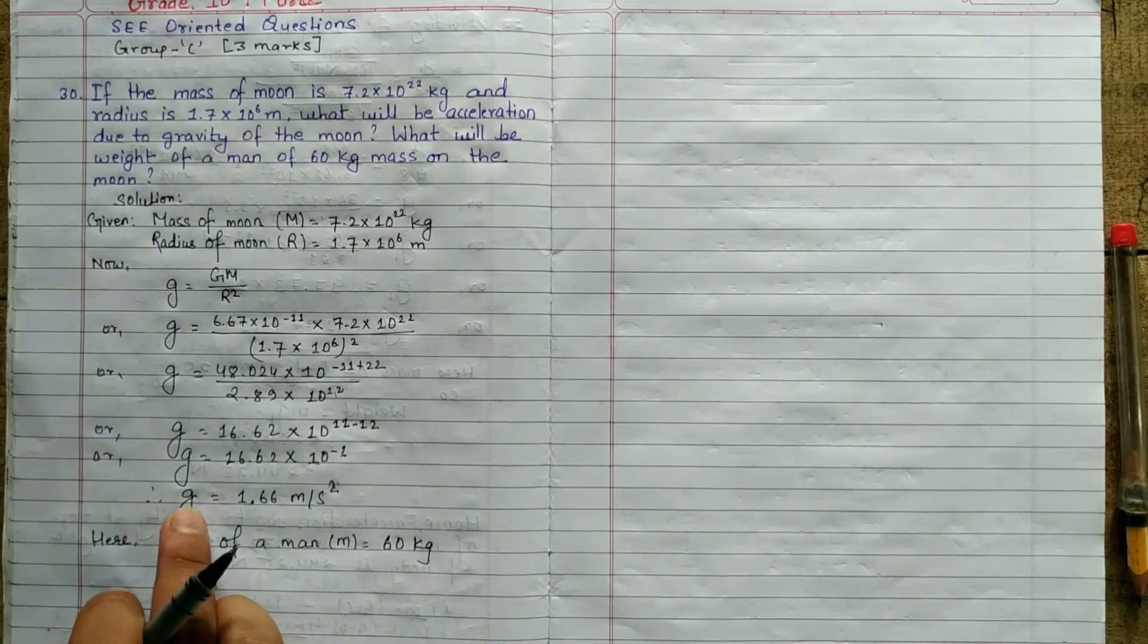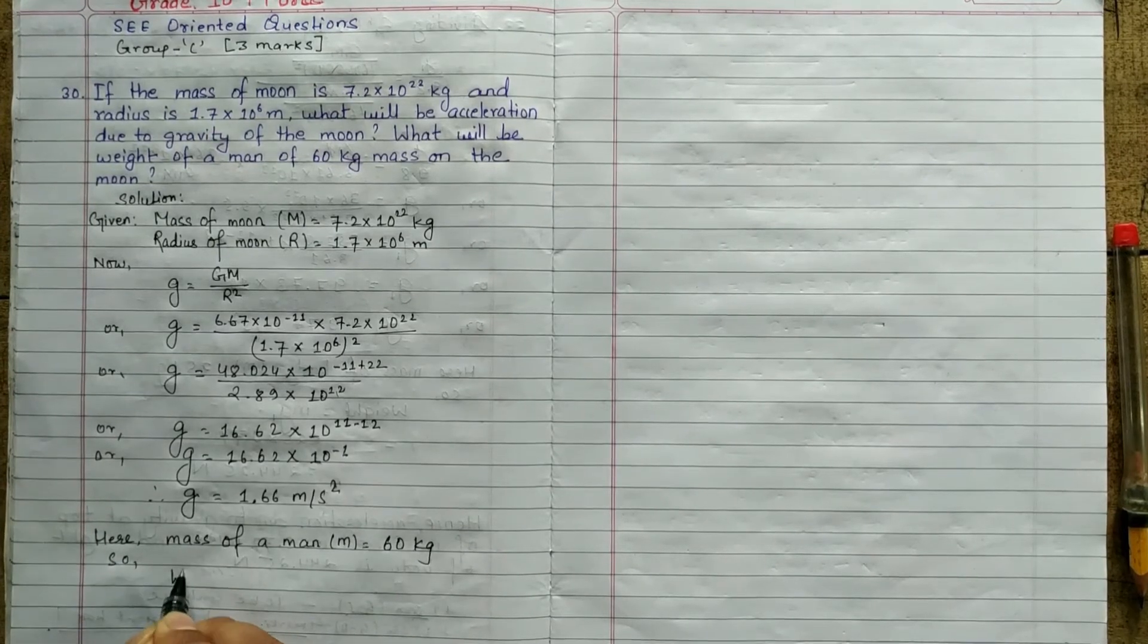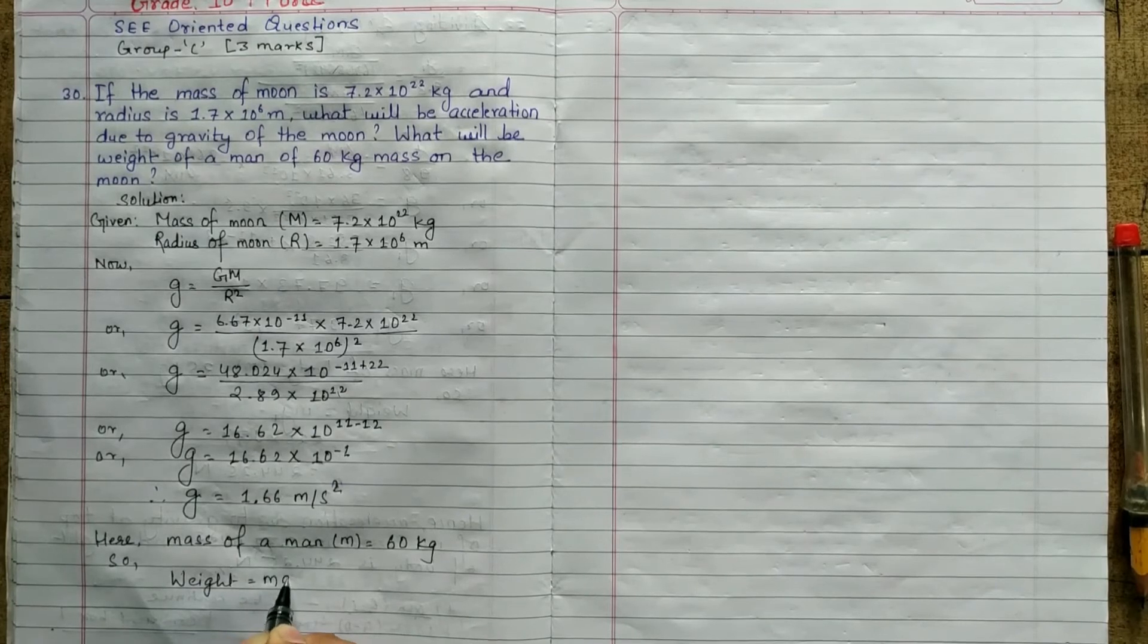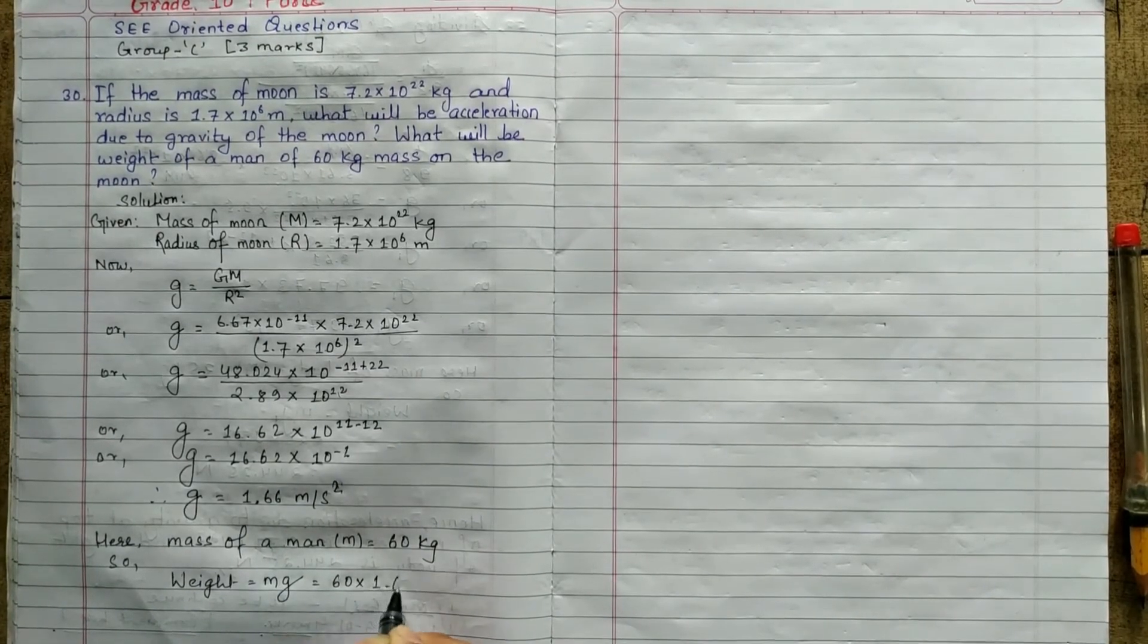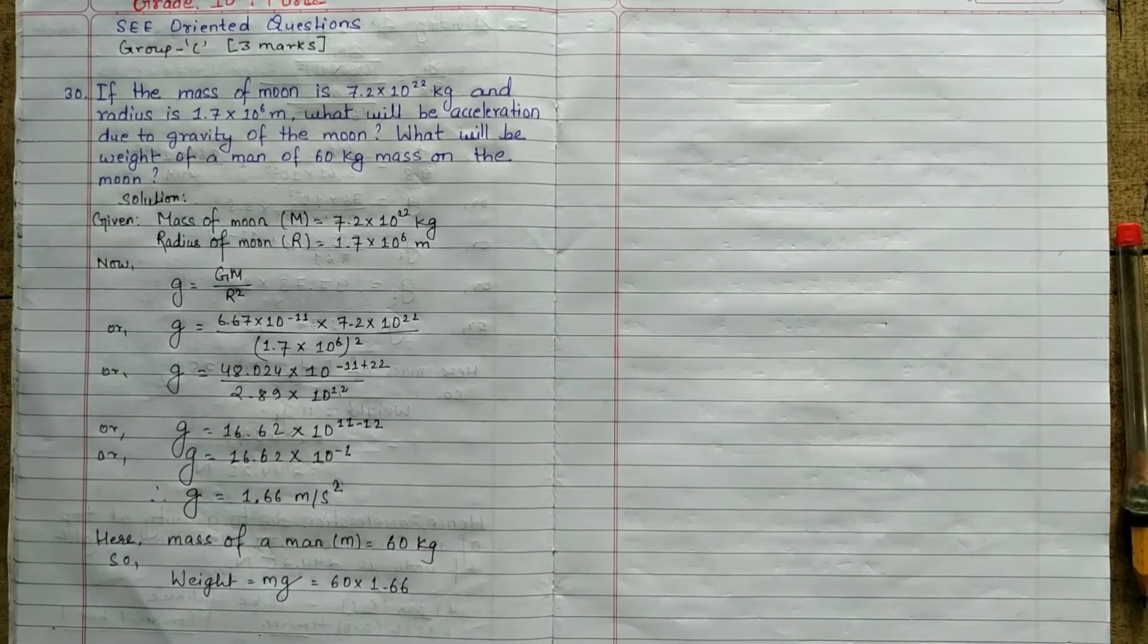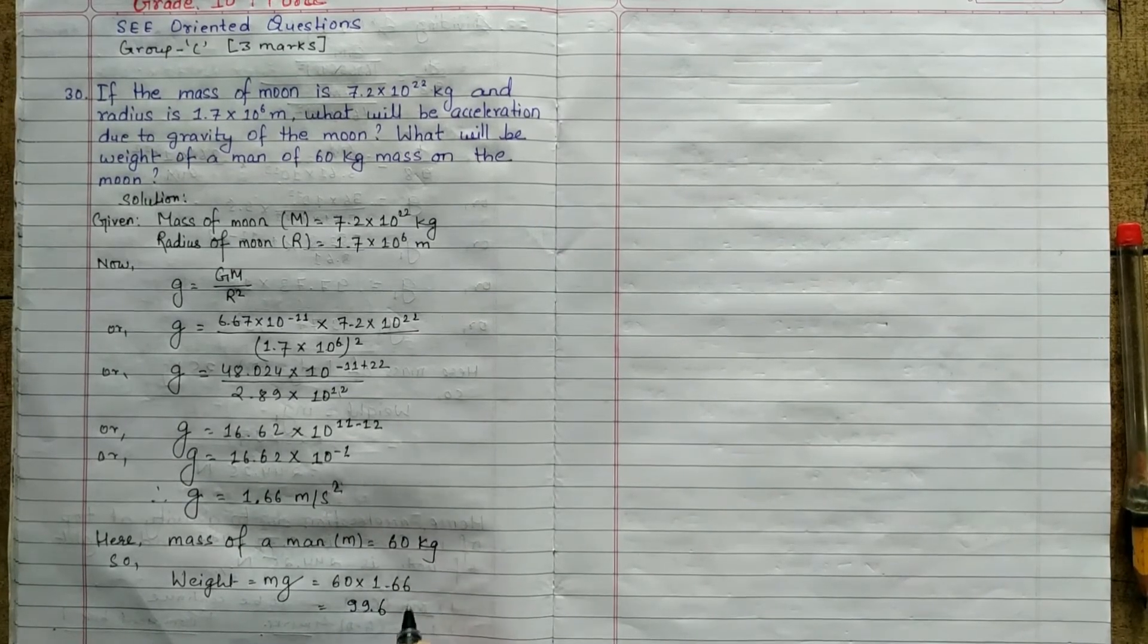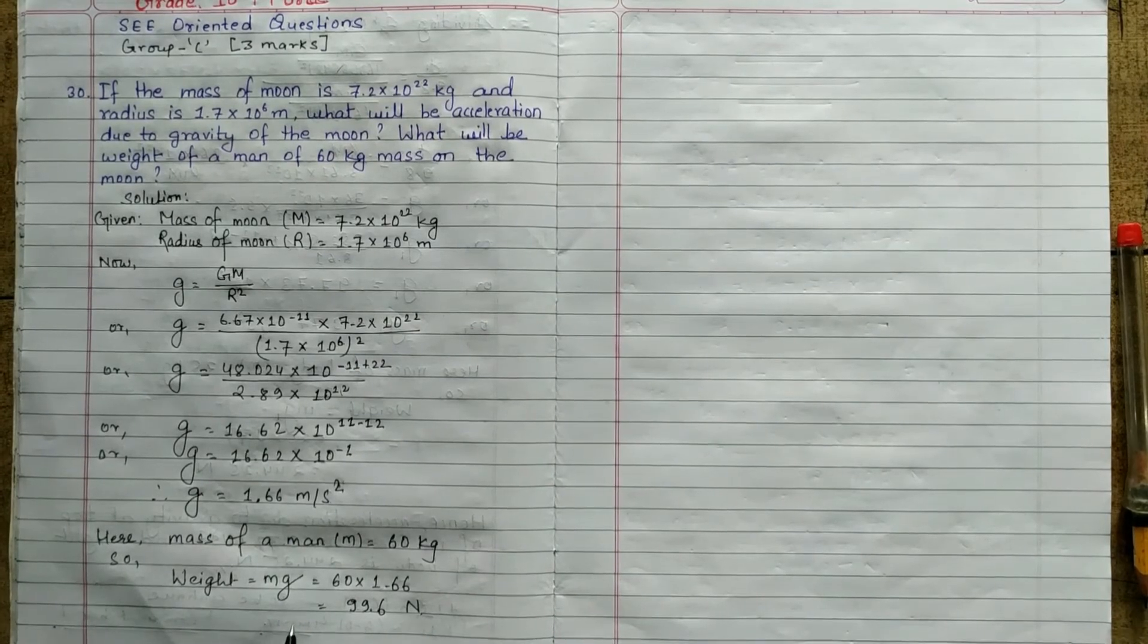Mass of a man is 60 kg, acceleration due to gravity 1.66 meter per second square. So weight formula is weight equals to mass into acceleration due to gravity. That will be 60 into 1.66. 60 into 1.66, about 99.6 Newton. Newton is the unit. Hence for the answer.